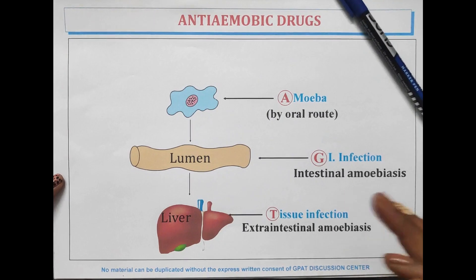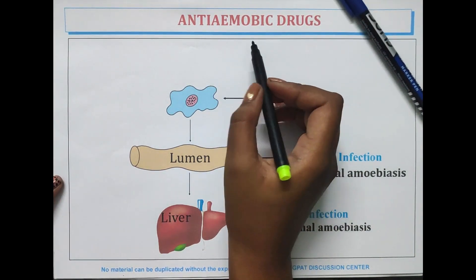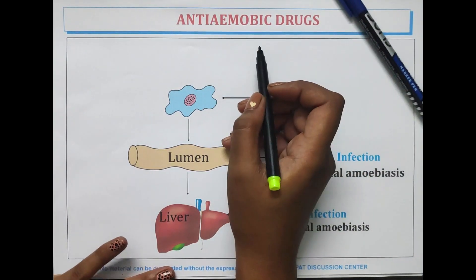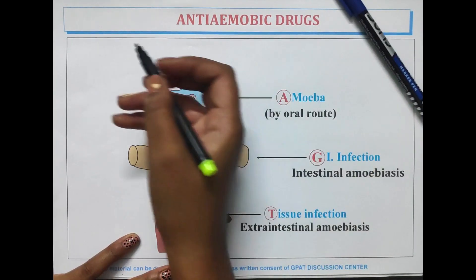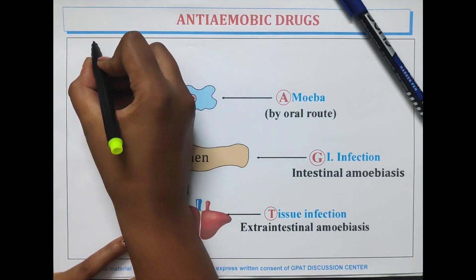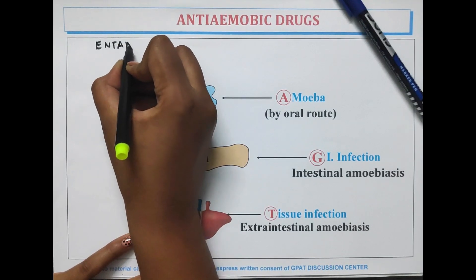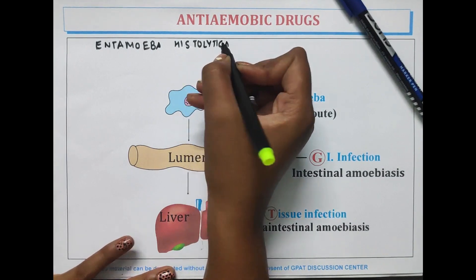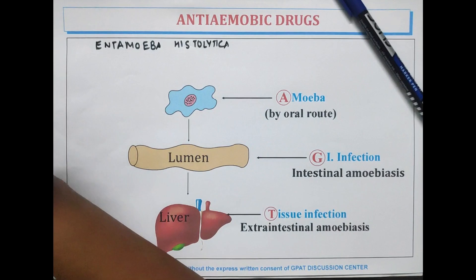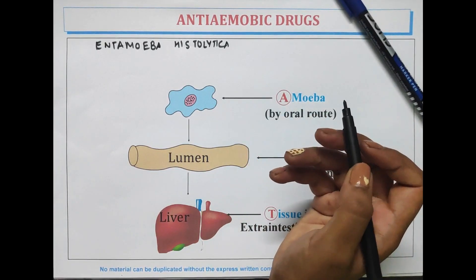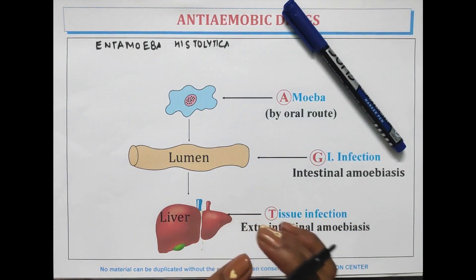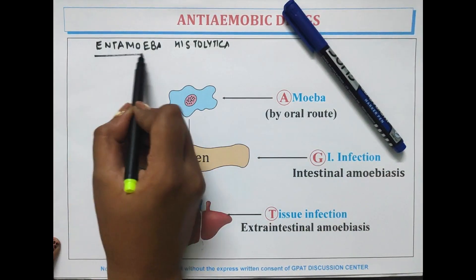Today in this video we will be learning about Anti-Amoebic Drugs. Anti-Amoebic means against amoeba, which refers to amoebiasis — amoebic dysentery — which is an infection caused by Entamoeba histolytica, a protozoa. Entamoeba histolytica is an anaerobic protozoa responsible for amoebiasis. This disease can be acute or chronic, with the patient showing various degrees of illness from no symptoms to mild diarrhea or fulminating dysentery.